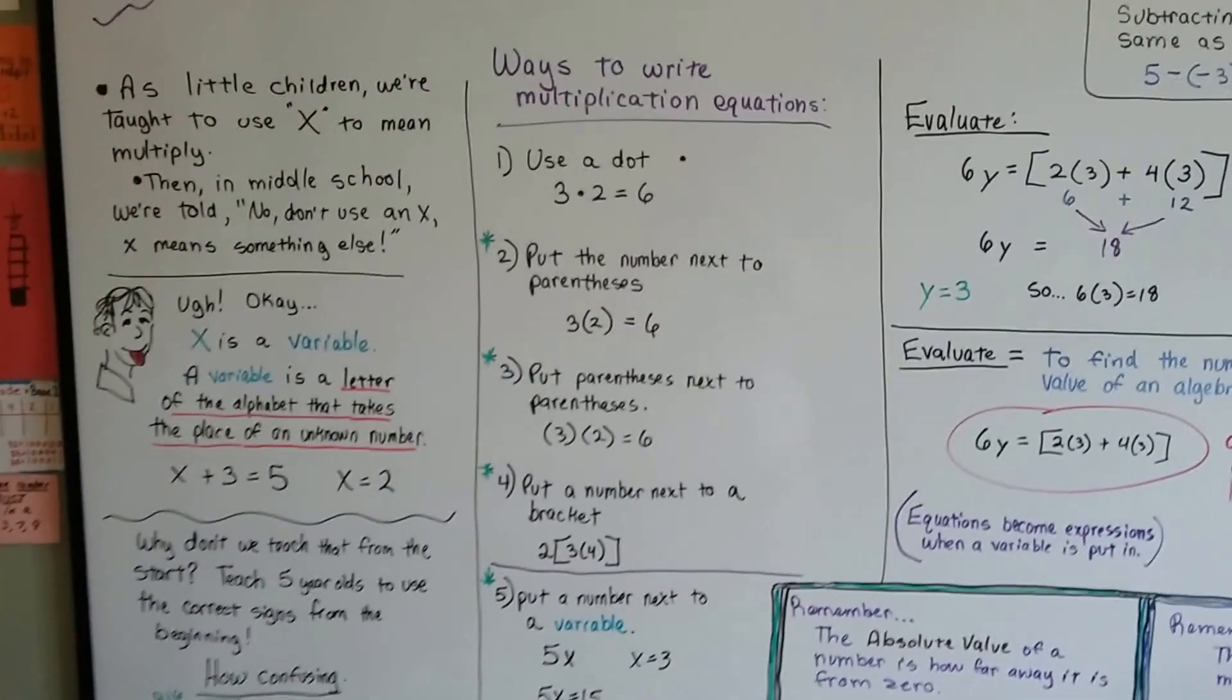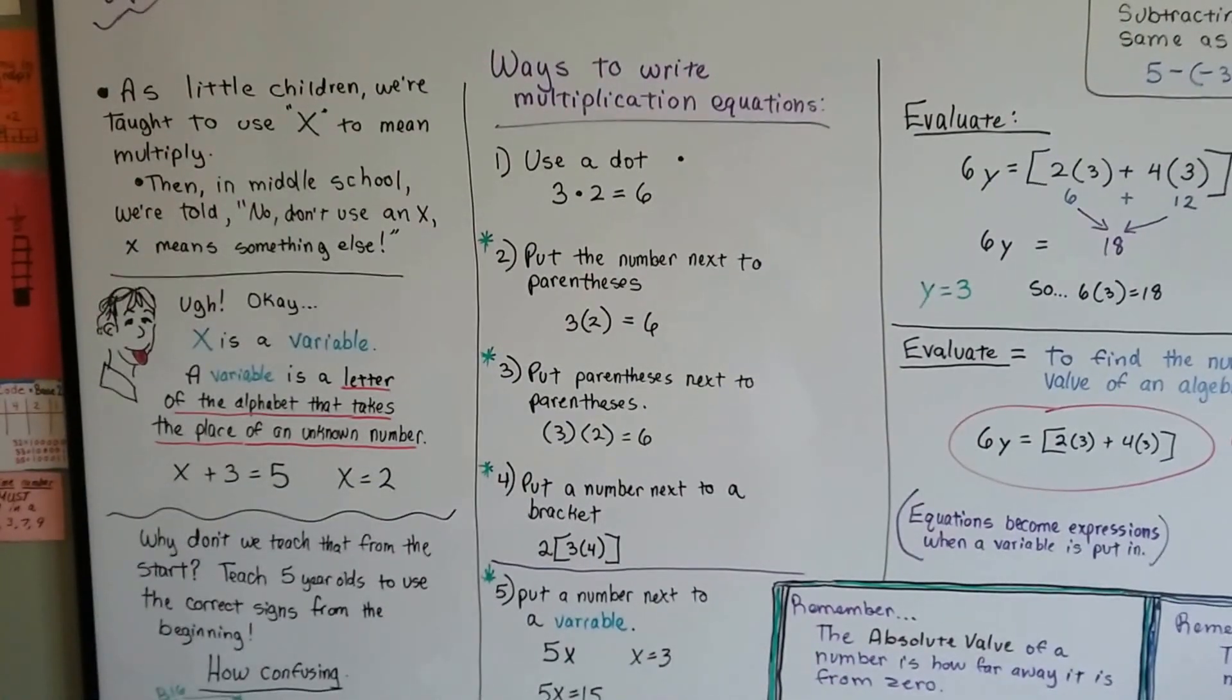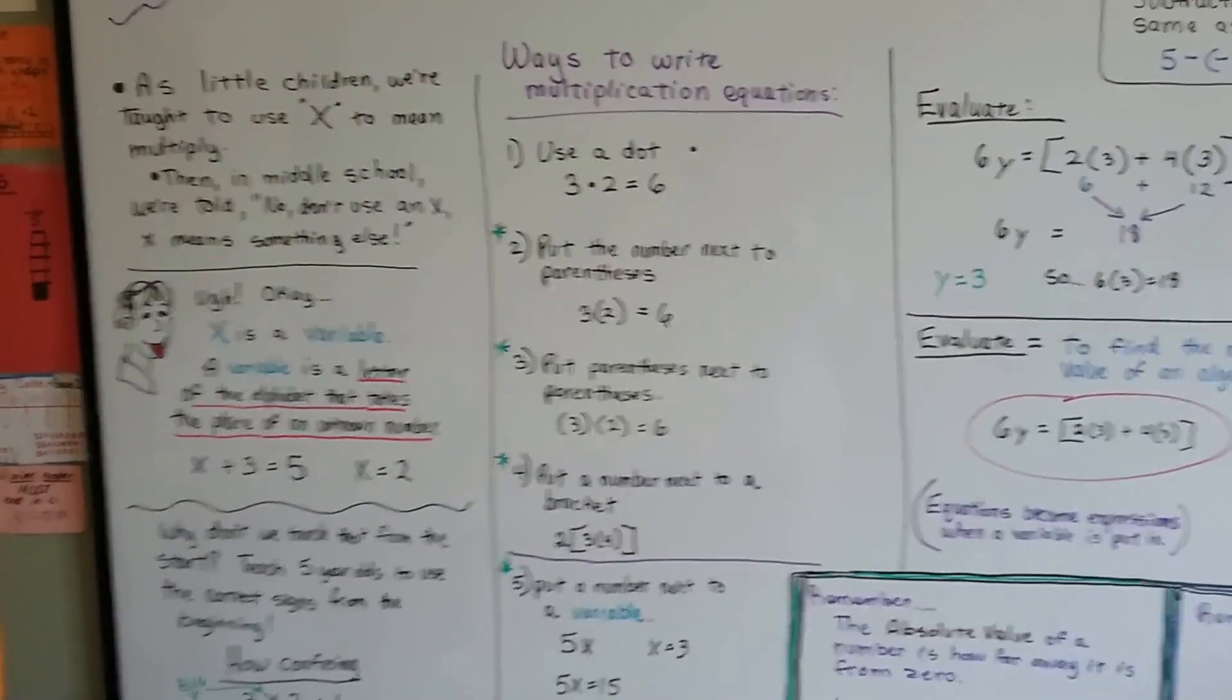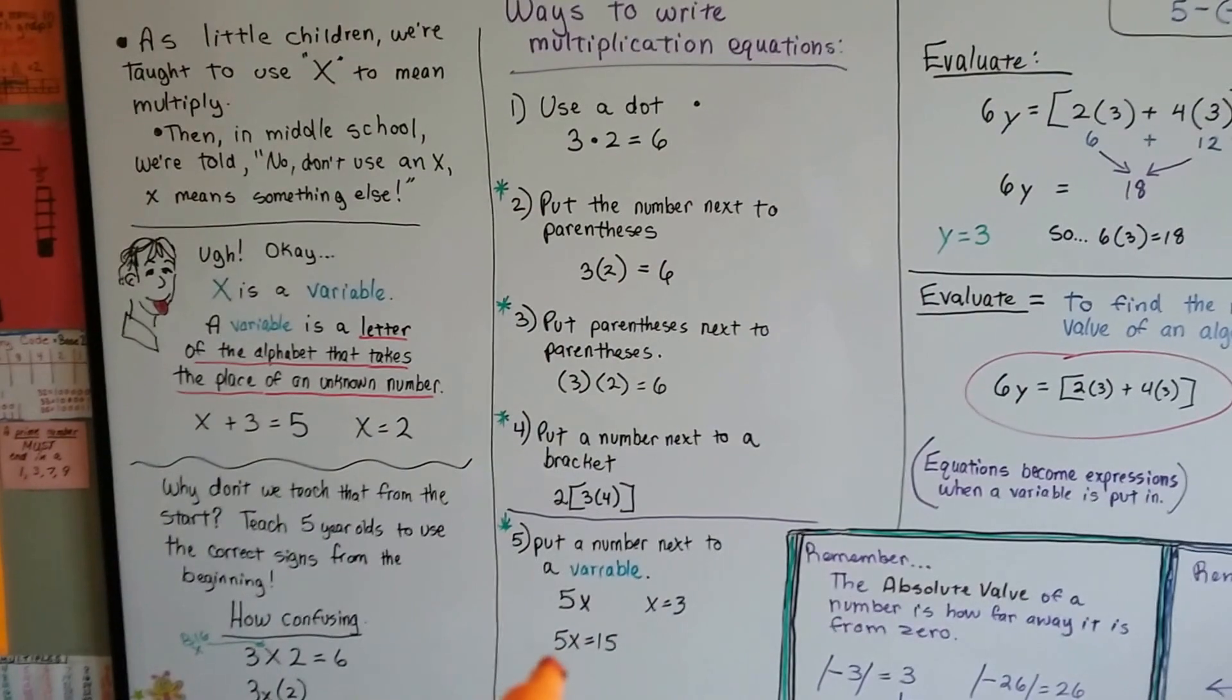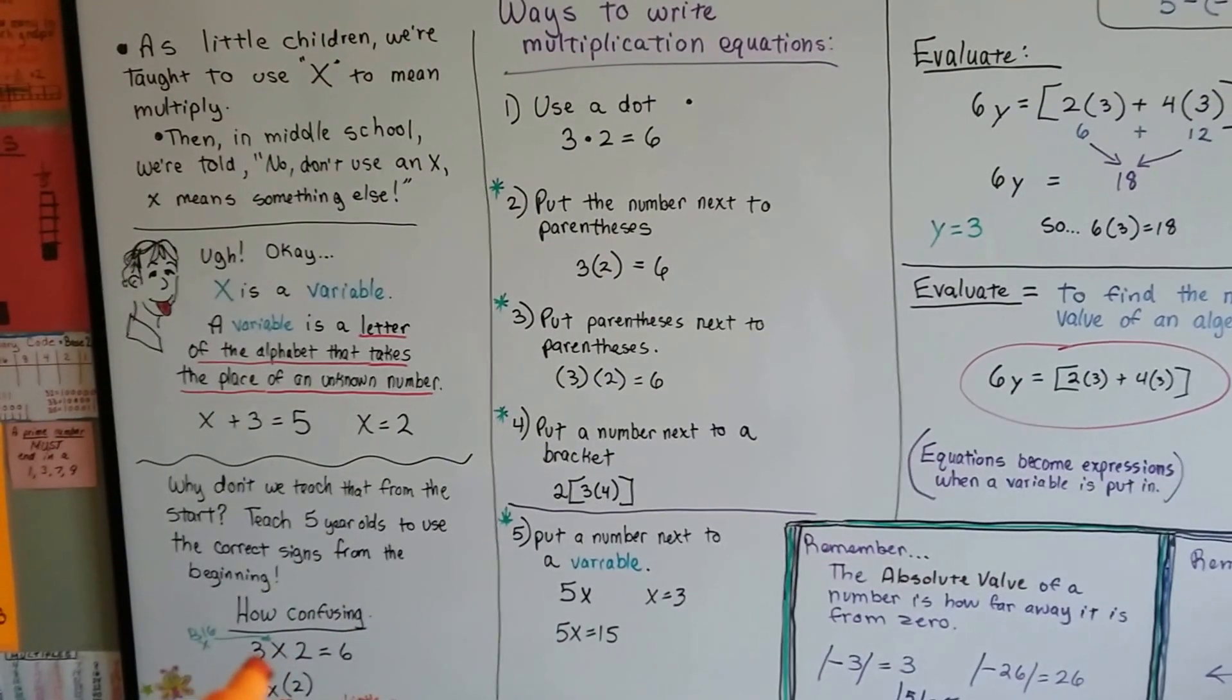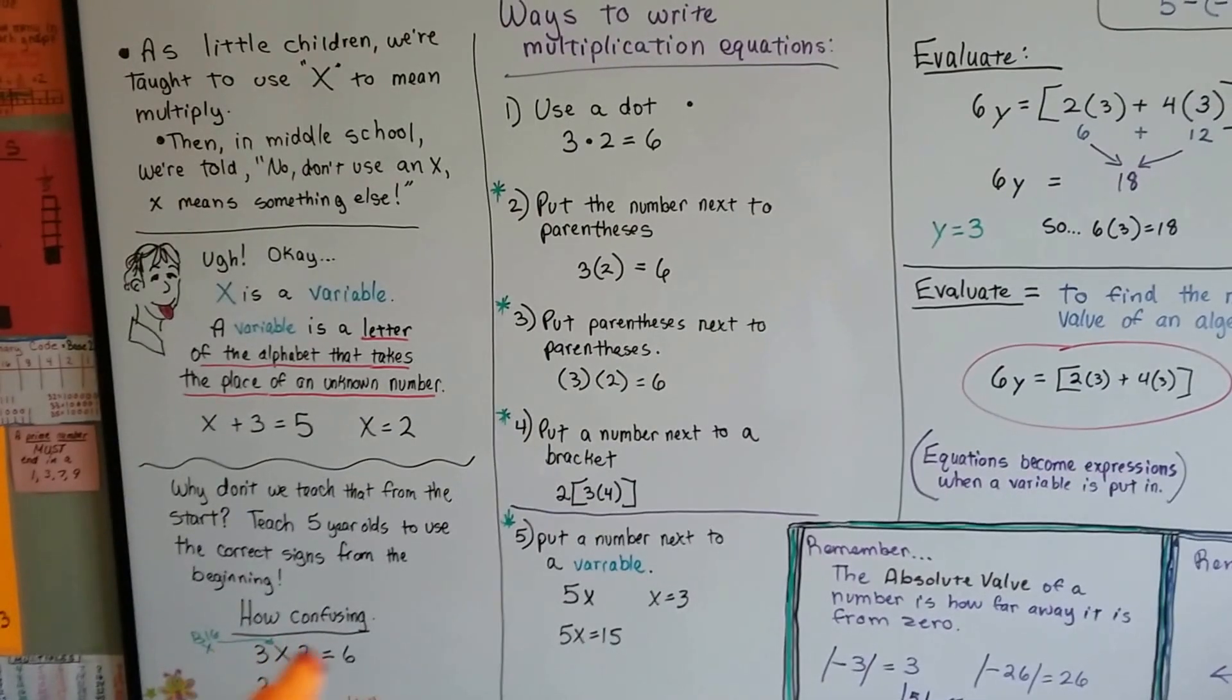Anyway, remember, a variable is a letter of the alphabet that's taking the place of an unknown number. Use parentheses, use dots, use brackets. When you see it written next to a lowercase letter, that's the variable. When it's a big, huge x, the same size as the numerals, then you know it means multiply.